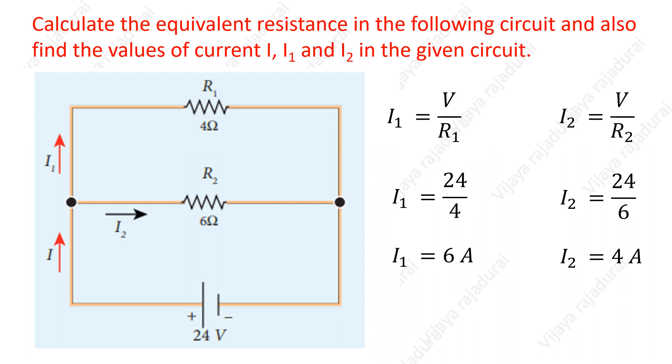The net current I is equal to I1 plus I2. Substituting these values gives 10 amperes.